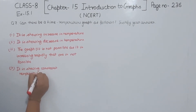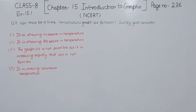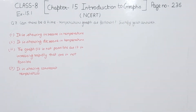So these are the 4 graphs showing different temperatures: the first one shows increasing temperature, the second one shows decreasing temperature, the third one is not possible because the temperature is increasing too rapidly, and the fourth one shows constant temperature. With this we have completed question number 7 and exercise 15.1. In the next video we are going to start with exercise 15.2.